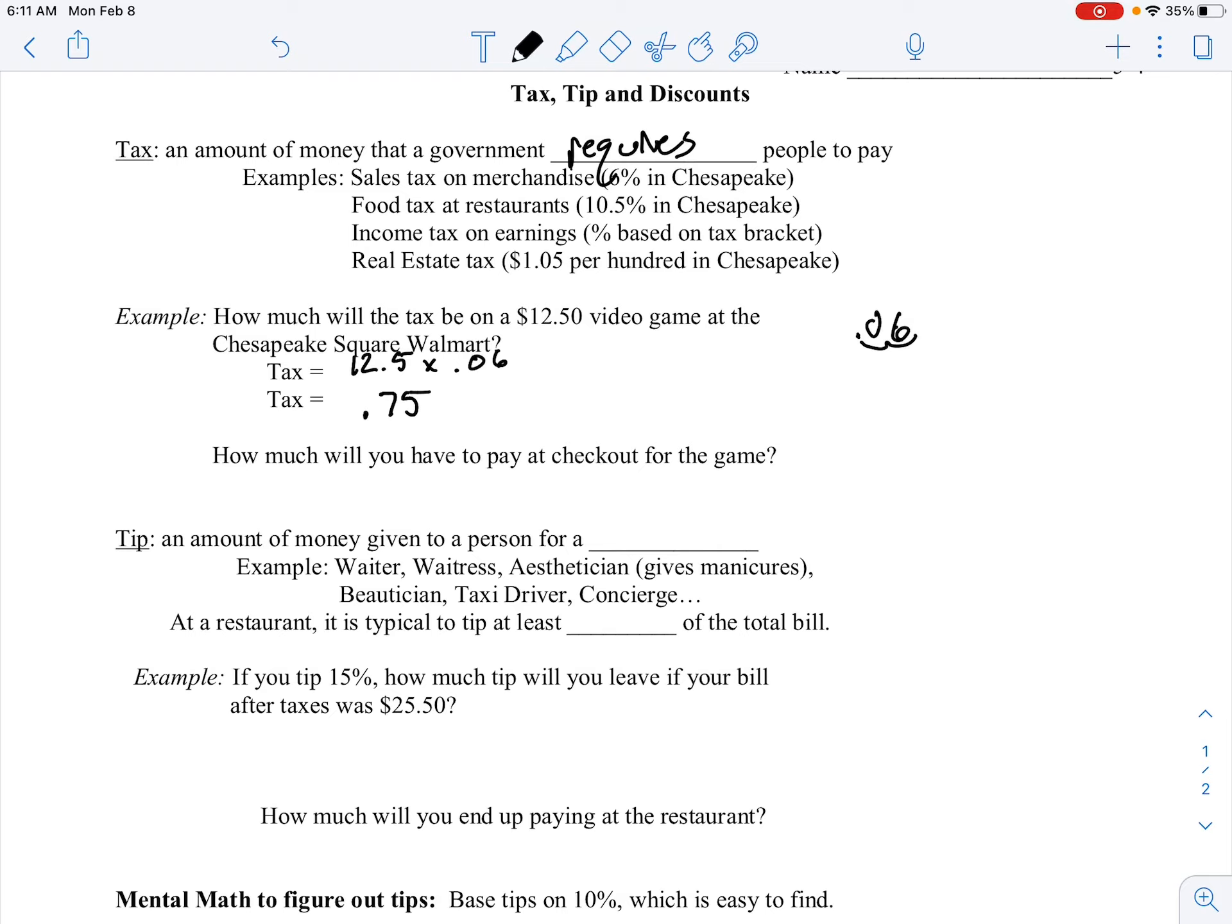And how much will we have to pay at checkout for the game? Well, what we have to do now is add to that $12.50 the 75 cents of tax. So we'll end up paying $13.25 for the whole game there. And that's as easy as that.